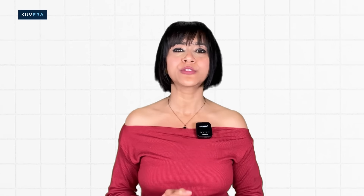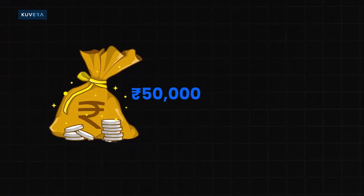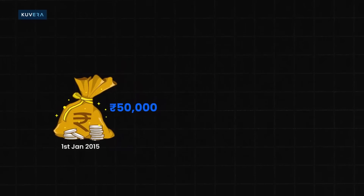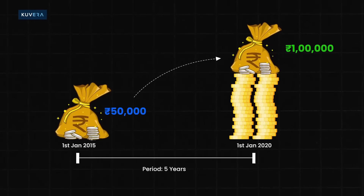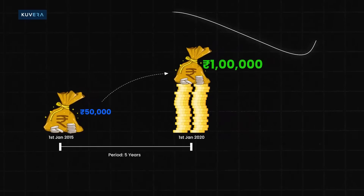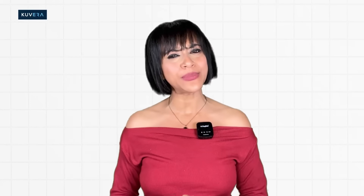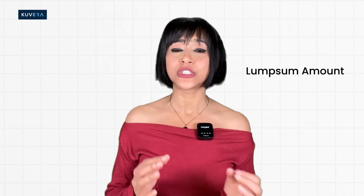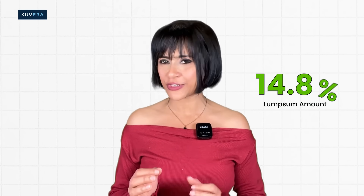In another case, if you put Rs 50,000 into your mutual fund on 1st January 2015, and on 1st January 2020 this investment grows to Rs 1,00,000, using the CAGR formula would be applicable. Since you simply want to measure the return for a lump sum amount between two dates, doing so would give a return of 14.8%.